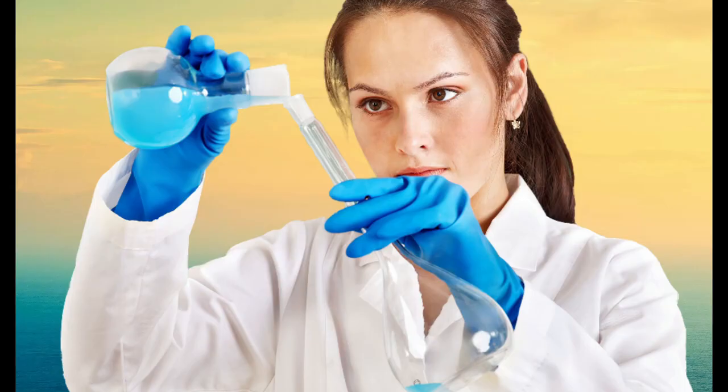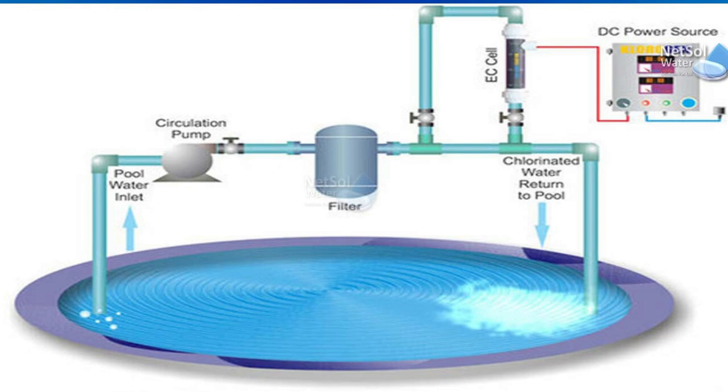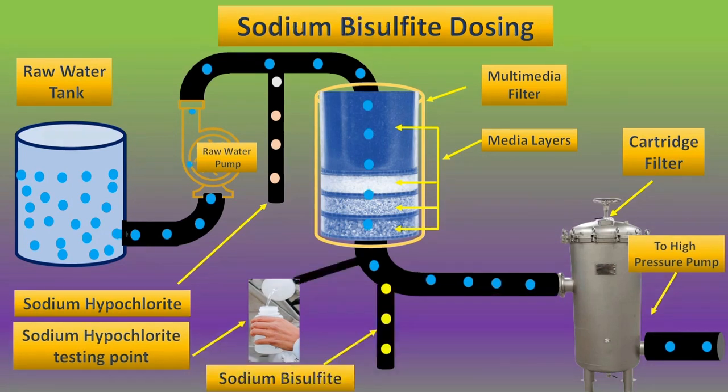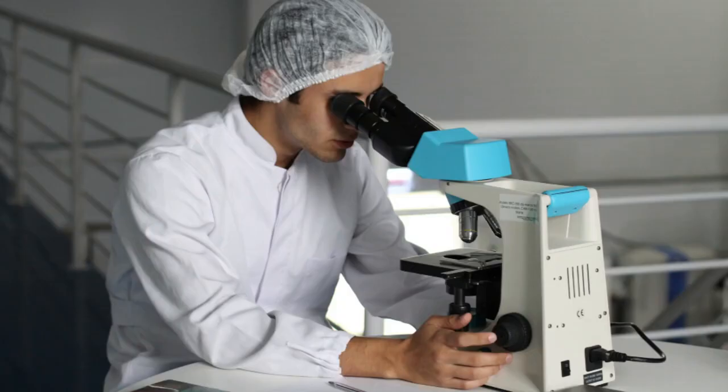Normally 0.2 to 0.5 ppm of sodium hypochlorite is used in the raw water. To make sure that the dosed sodium hypochlorite is enough for disinfection or chlorination, we need to test the raw water after the multimedia filter before the sodium bisulfate dosing point. If we find a small amount of hypochlorite in that water, it means that the dosed chemical amount is enough.